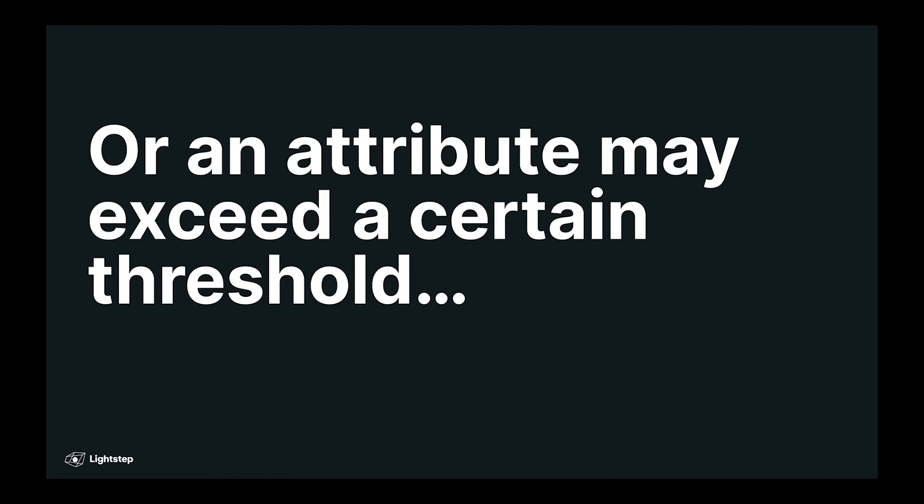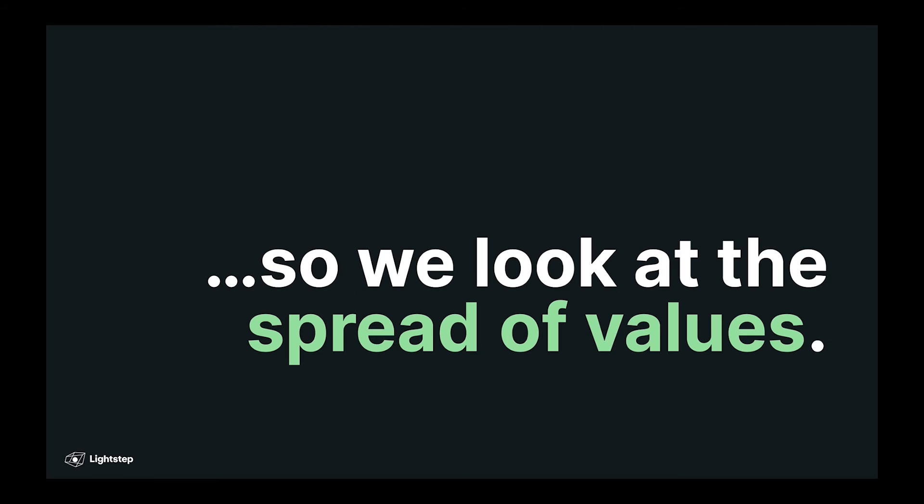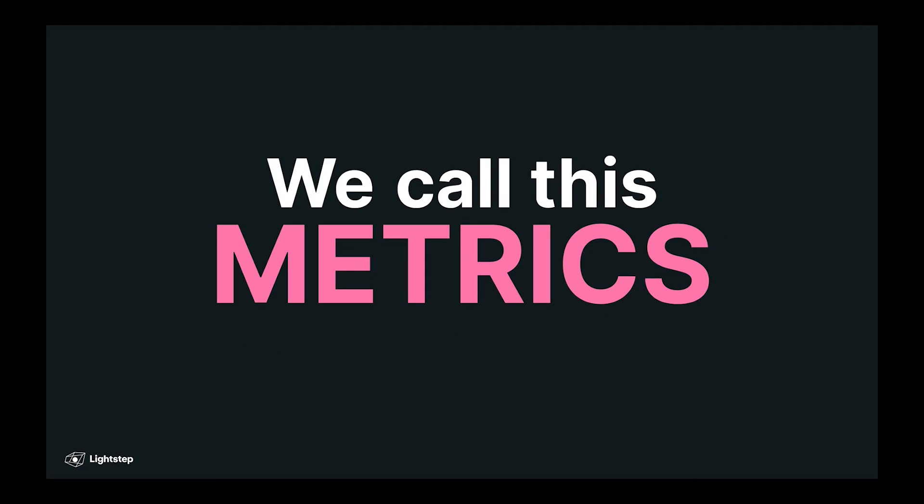Alternatively, you may be looking at the value of an attribute and seeing if it exceeds a certain threshold that you know is bad. For example, latency, a request taking too long. So in those cases, you want to look at the spread of values. How many requests are taking over 5 seconds? How many requests are taking 1 second? How many requests are taking 30 milliseconds? In other words, you want to look at a histogram. And we tend to call these kinds of aggregations that we're alerting on metrics.